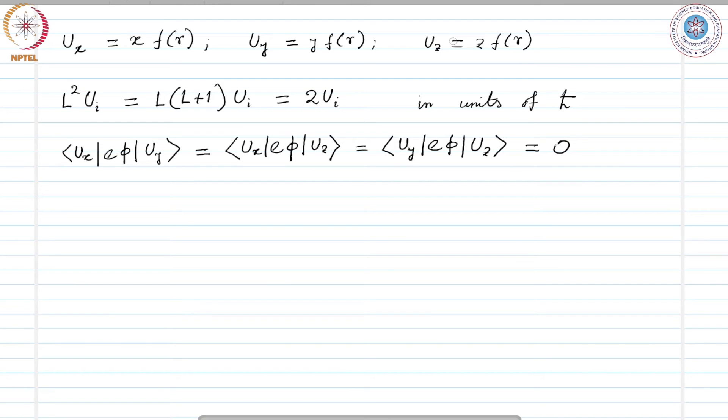Let us consider an example: ⟨u_x|e·φ|u_y⟩. This element can be given as the integral of x·y·|f(r)|² times [a·x⁴ + b·y²·x² - (a+b)·z²·x²] dx dy dz.